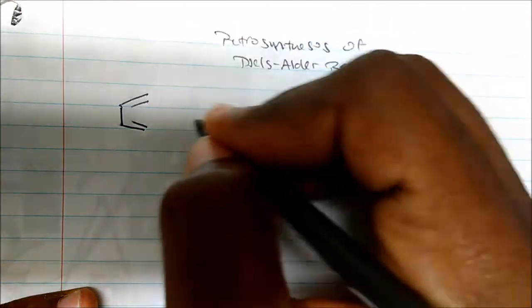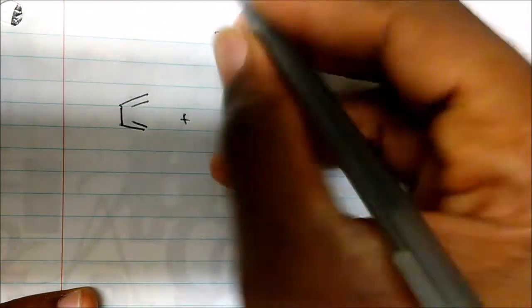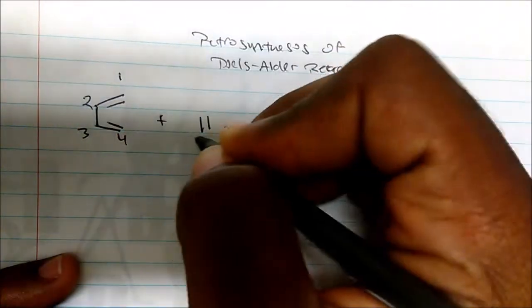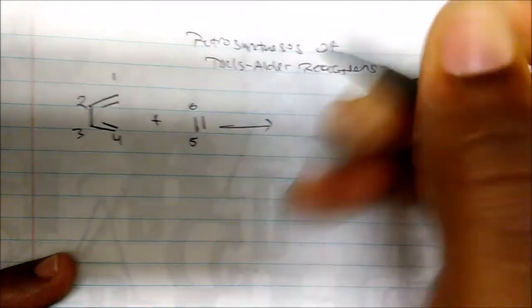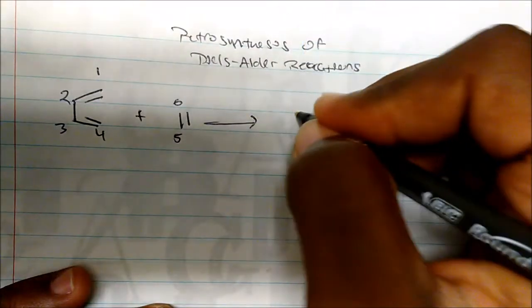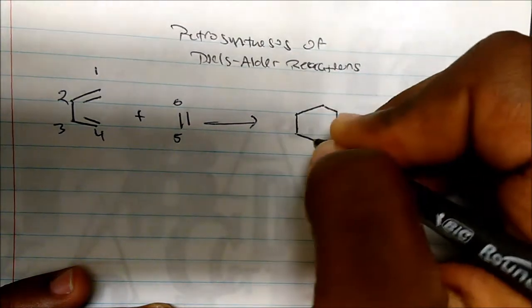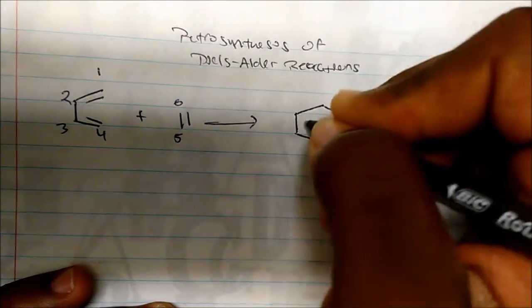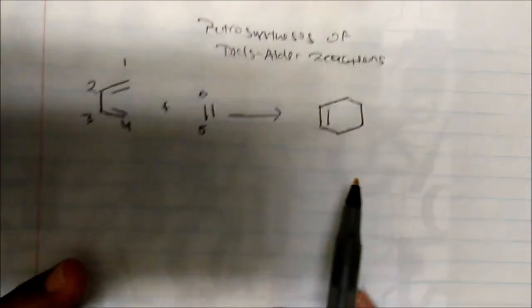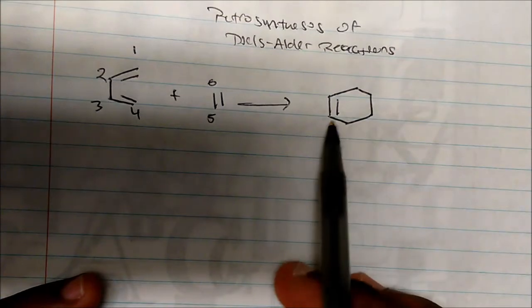If I take butadiene and react it with ethylene, I label carbon 1, 2, 3, 4, 5, 6 and we get our cyclohexane ring with the double bond between carbons 2 and 3.